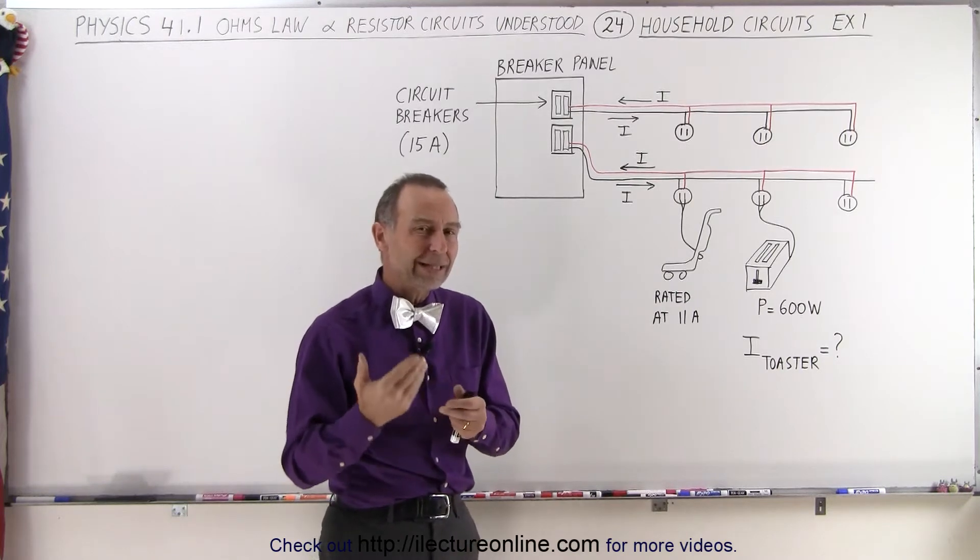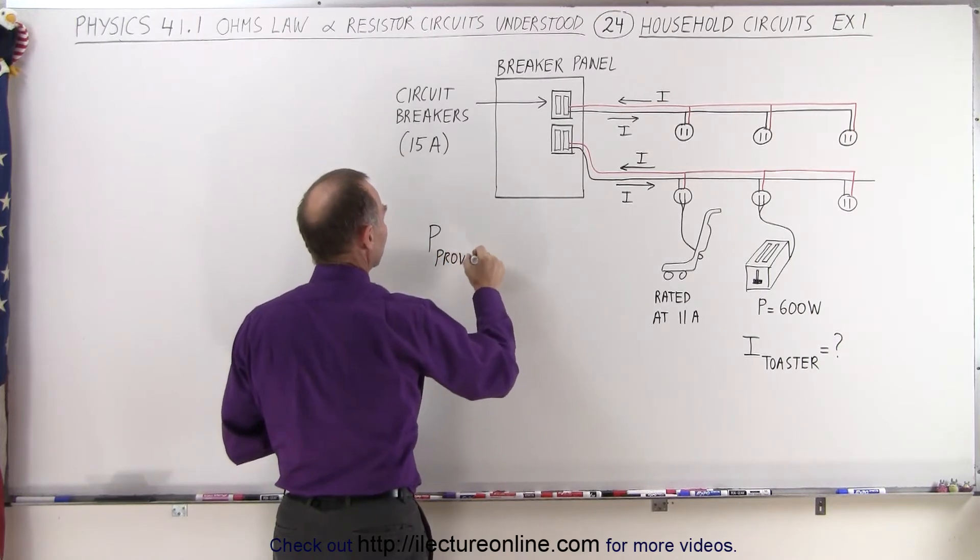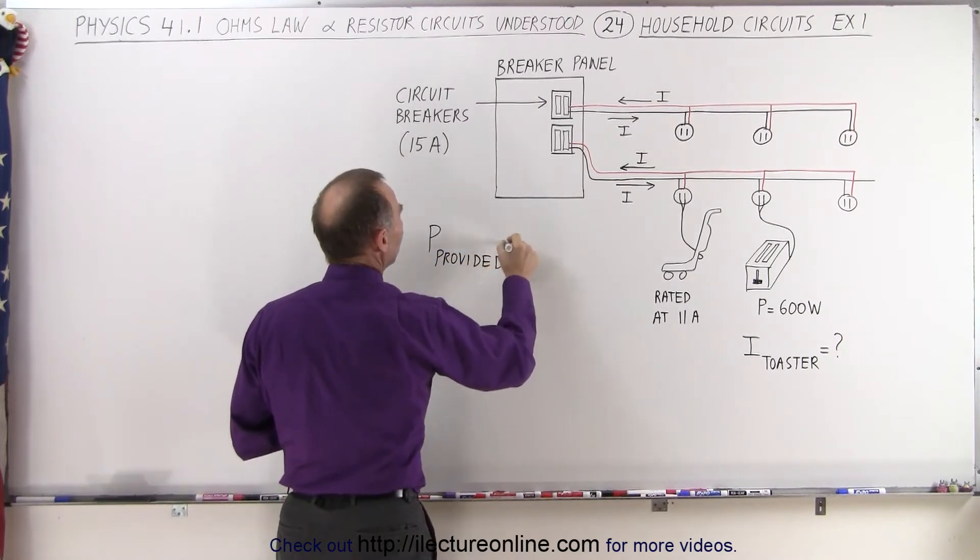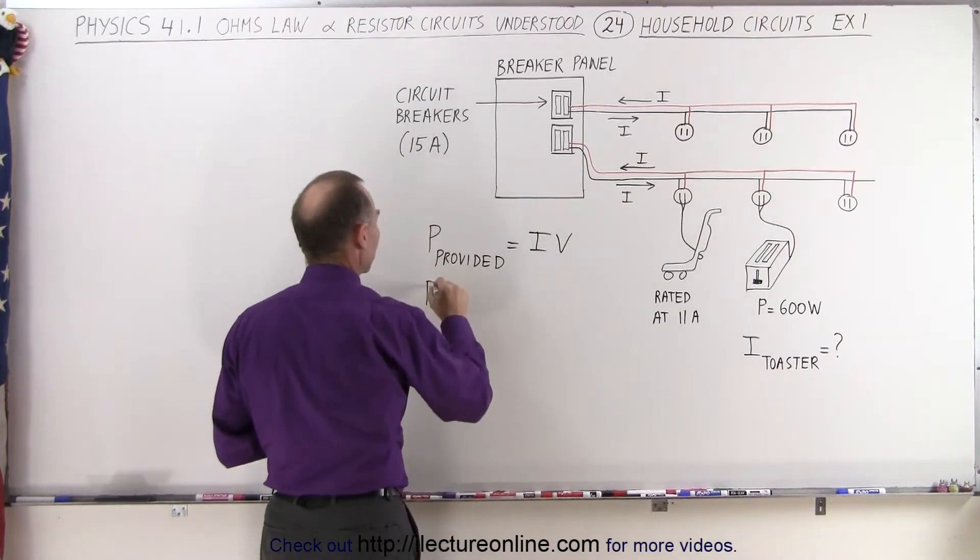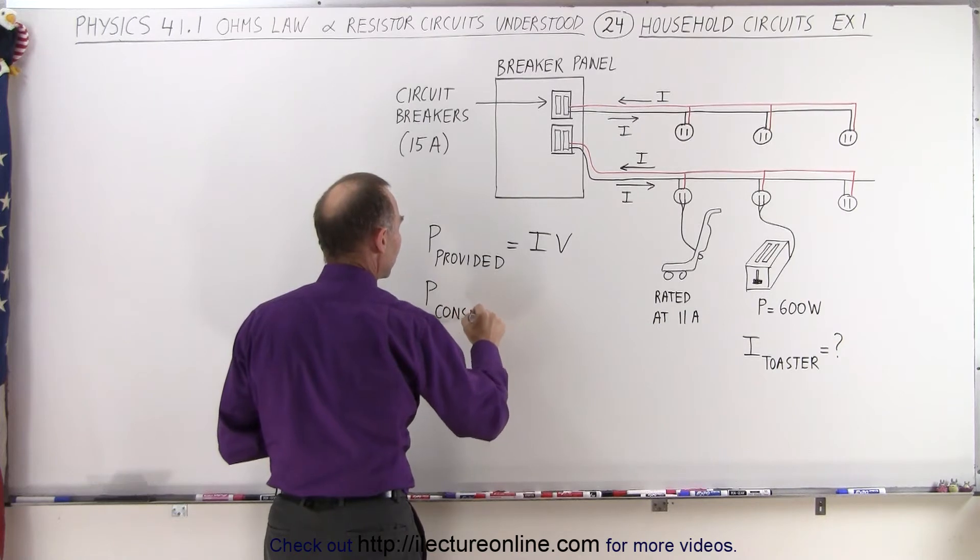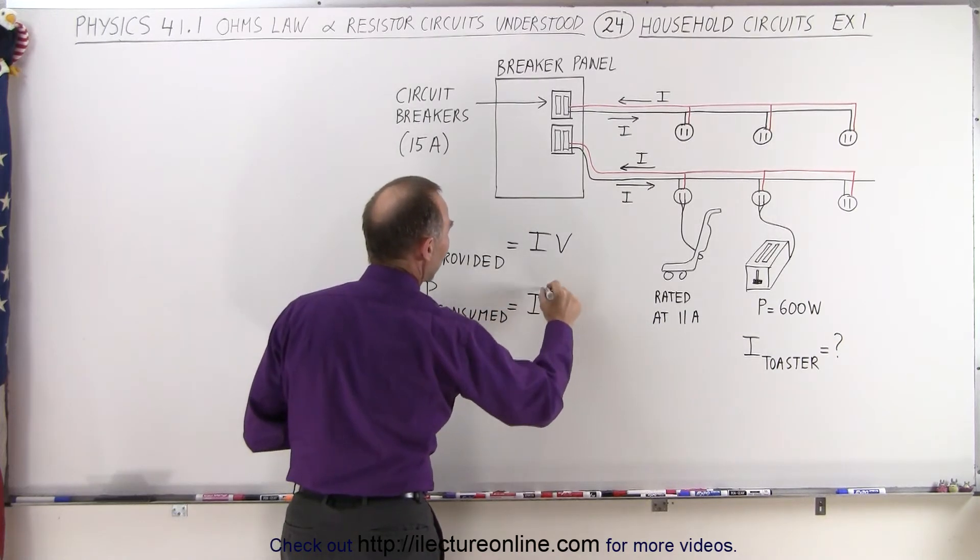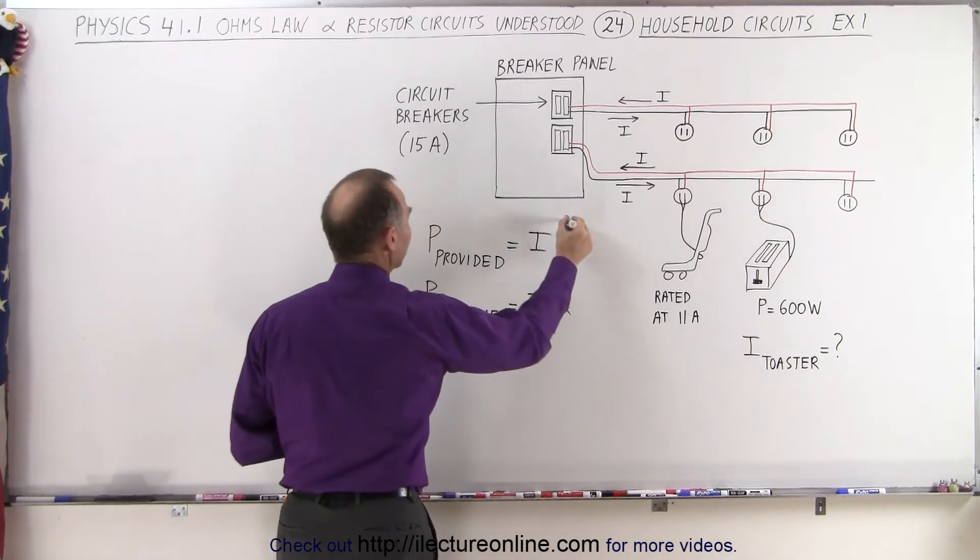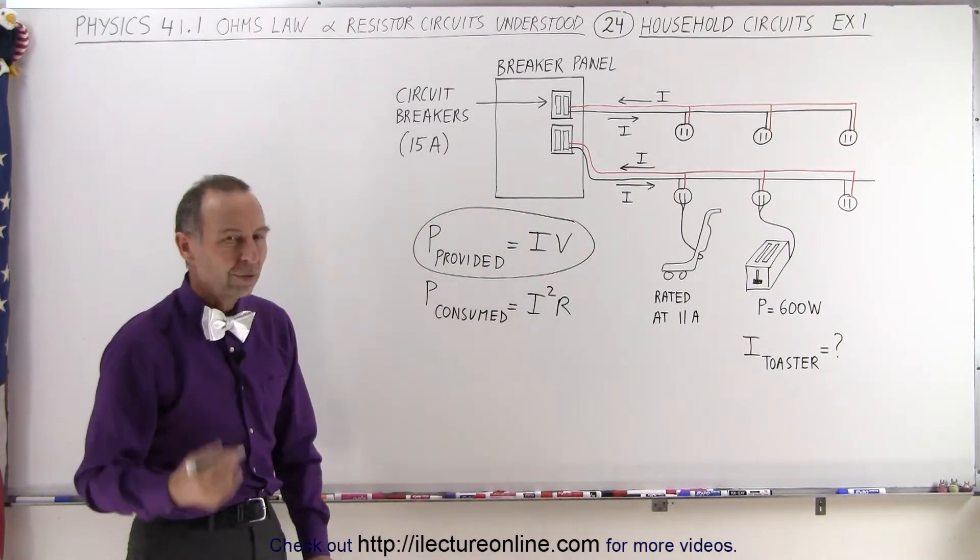Well, there's two equations to calculate the power. One equation is the power provided by a circuit is equal to the current times the voltage, P = IV. The other equation is the power consumed or dissipated by the load, and that is typically equated to be I squared times R. So let's go ahead and use the equation: the power provided is the current times the voltage.